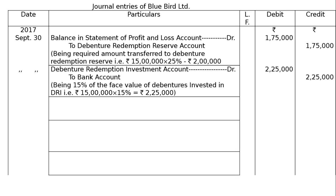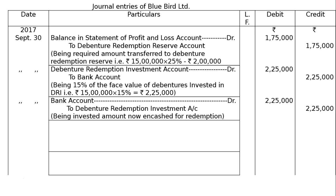Then we have to take out that money for redemption. We have to sell the investments: bank account debited to debenture redemption investment account Rs 2 lakh 25,000, being invested amount now encashed for redemption.